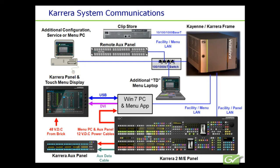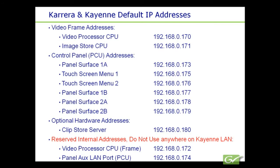The Cayenne and Carrera systems are set up to use default IP addresses in the factory. If the system is installed with these IP addresses, all items should connect and operate without the need for further changes. If, for some reason, menus or panels do not connect, or if different IP addresses are required, they can be checked or changed as follows.